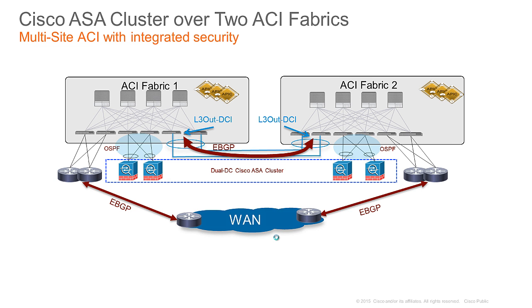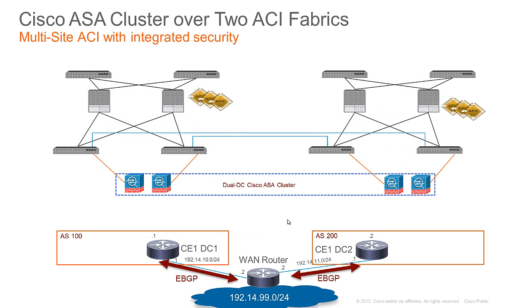Let me go ahead and get started. Moving towards the logical view — first, the ASA cluster. There are two ASA devices in site one and two ASA devices in site two. The first thing we need to do for those devices to be in the same cluster is make sure that the CCL — the cluster control link — is actually logically extended between the two data centers.